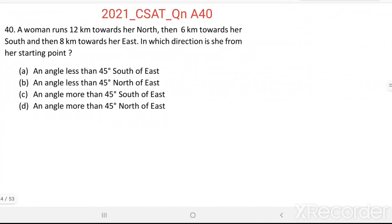Question number 40. A woman runs 12 km towards her north, then 6 km towards her south and then 8 km towards her east. In which direction is she from her starting point?